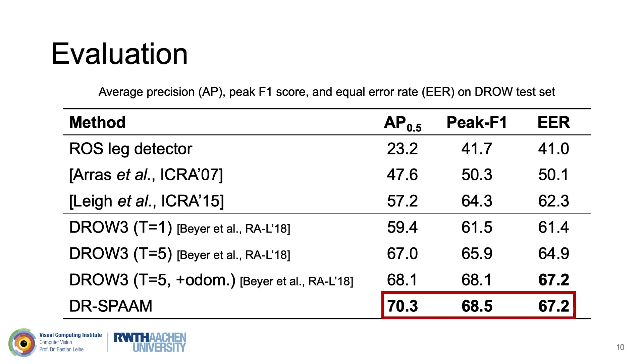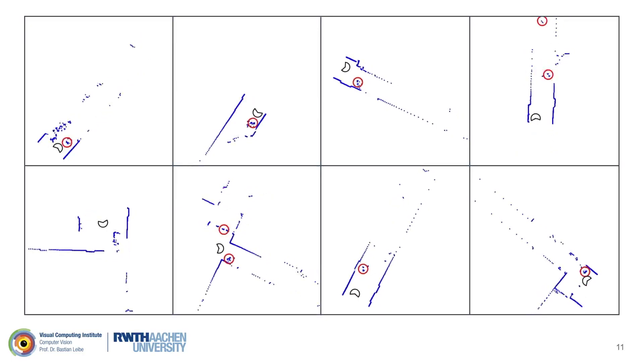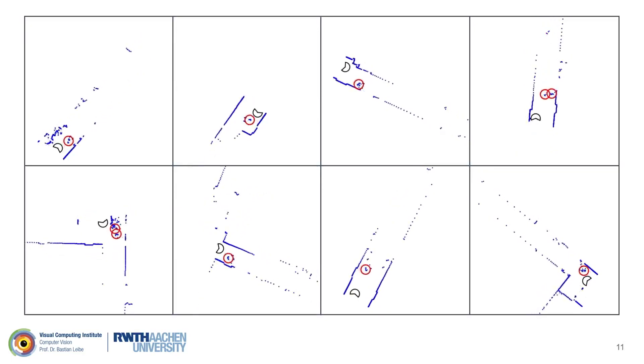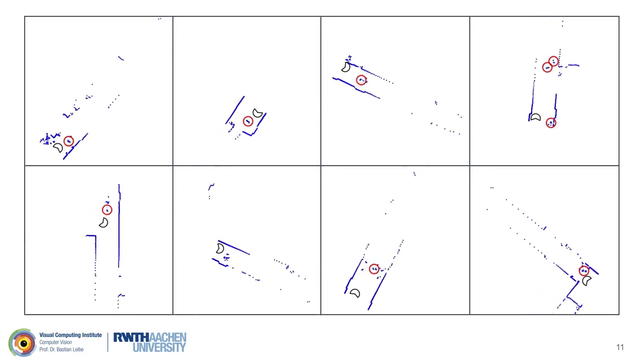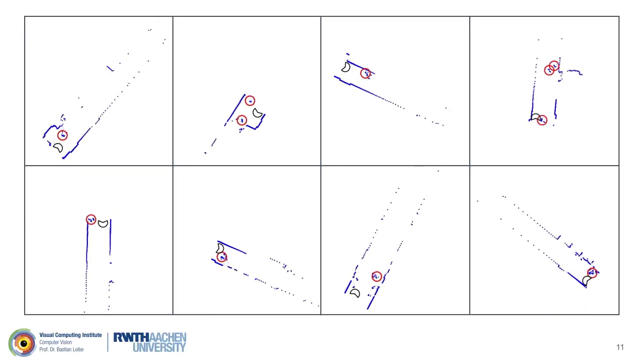The numbers show that DRSPAN outperforms the previous state-of-the-art method even without using odometry information. Here we show some qualitative results. We can see that DRSPAN detects persons robustly even at far distance or in crowded scenarios.